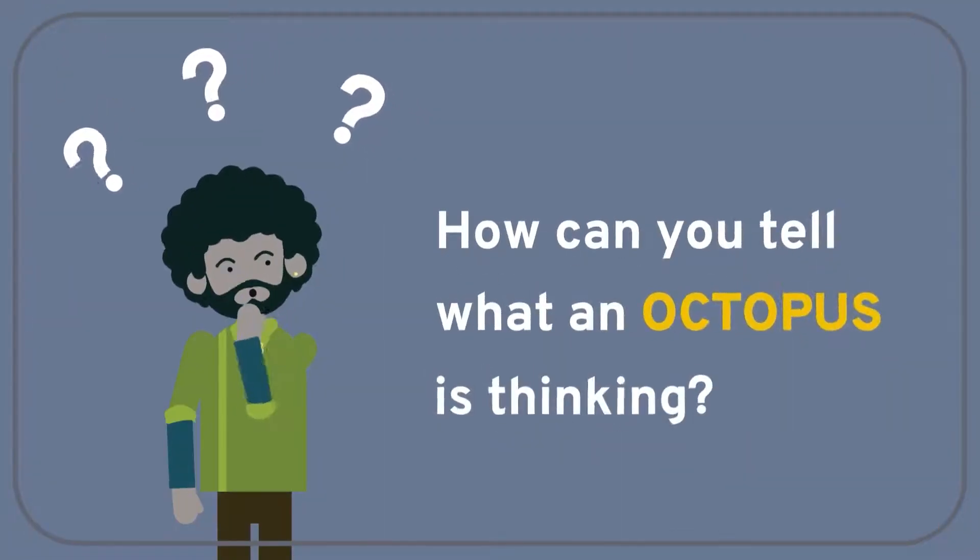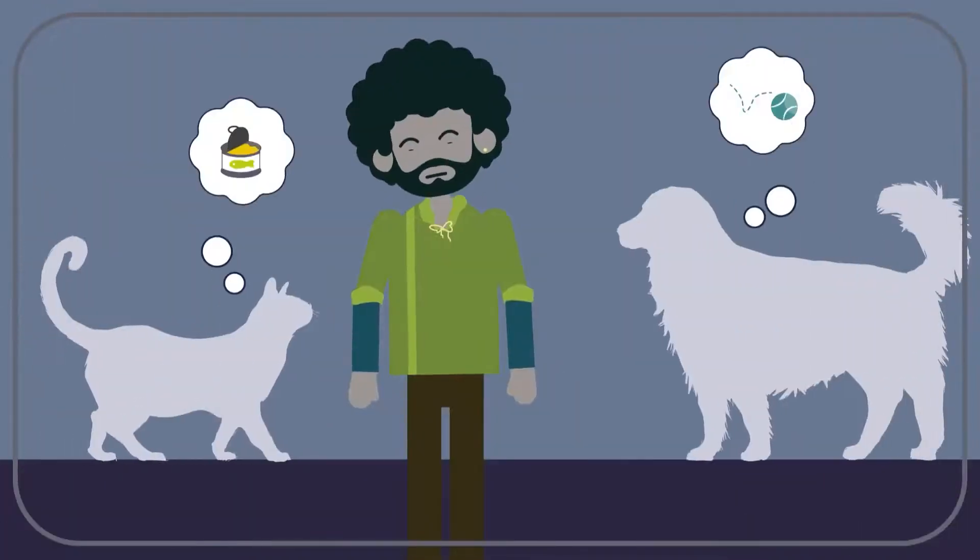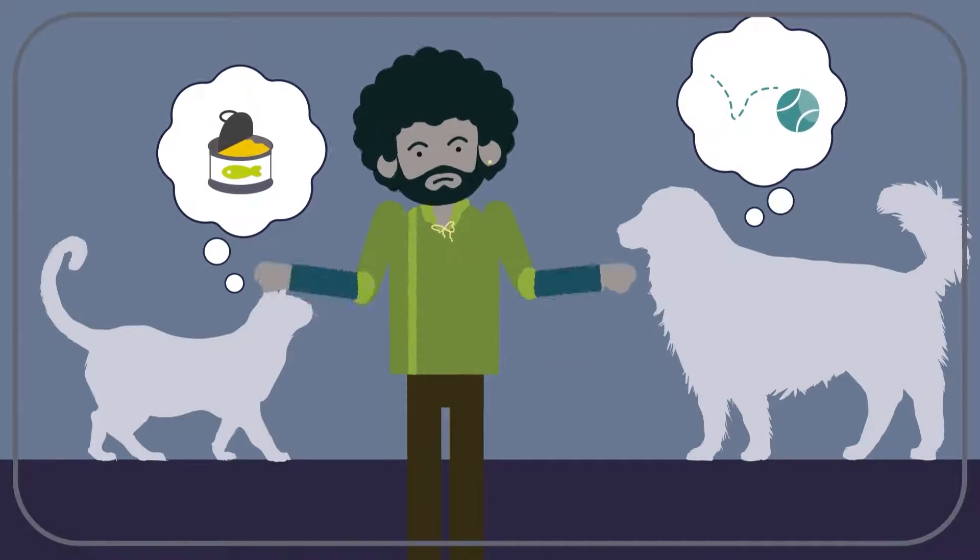How can you tell what the octopus was thinking? How, more genuinely, can we tell what goes in the minds of our pets and other creatures we encounter?